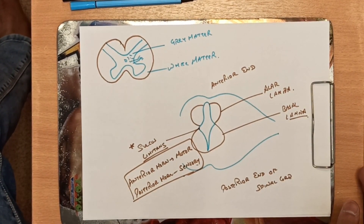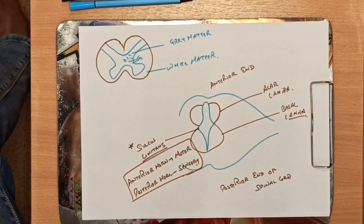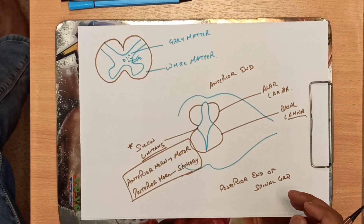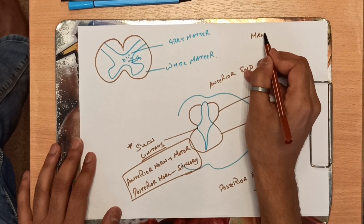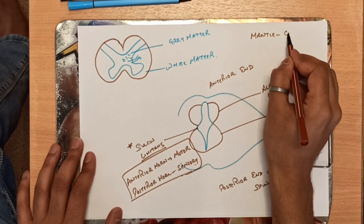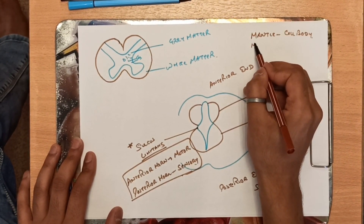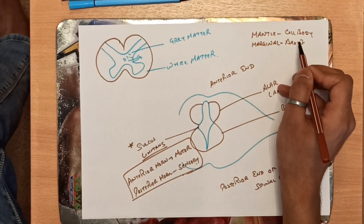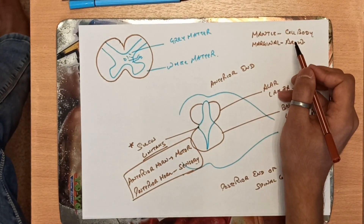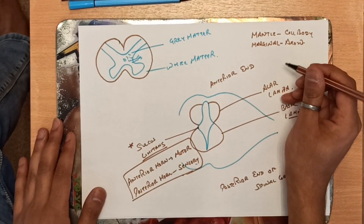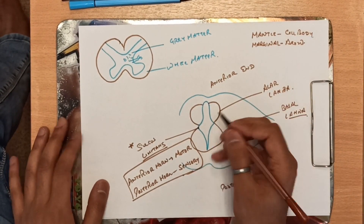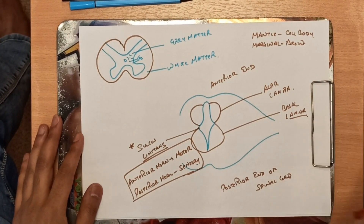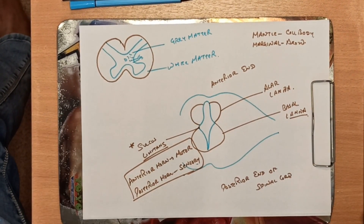So guys, the main things to remember in the development of the spinal cord: there are mainly three regions — matrix, mantle, and marginal. The mantle zone consists of cell bodies, and the marginal zone contains axons. Later on in further videos I will be telling you about how the central canal of the spinal cord is formed. Thank you for watching this video, I hope you all liked it.